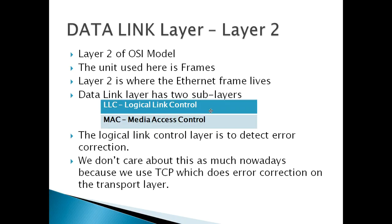In this layer, you can use frames, or you can use Ethernet frames. This is the MAC address. The data link layer has two sublayers: the Logical Link Control and the Media Access Control.